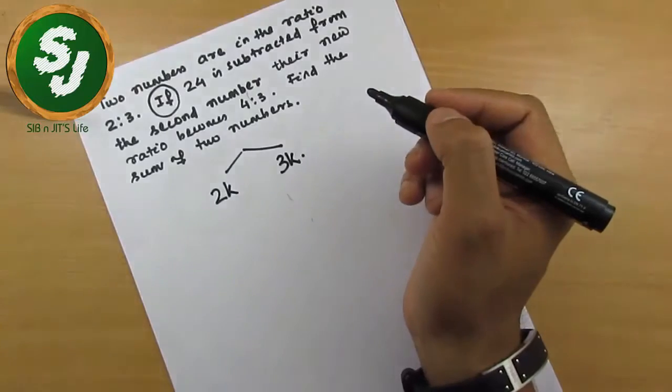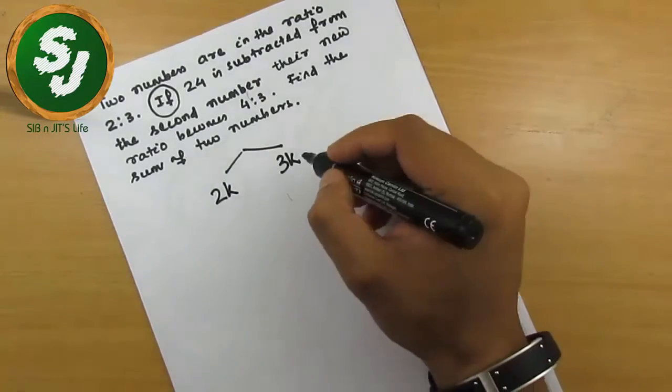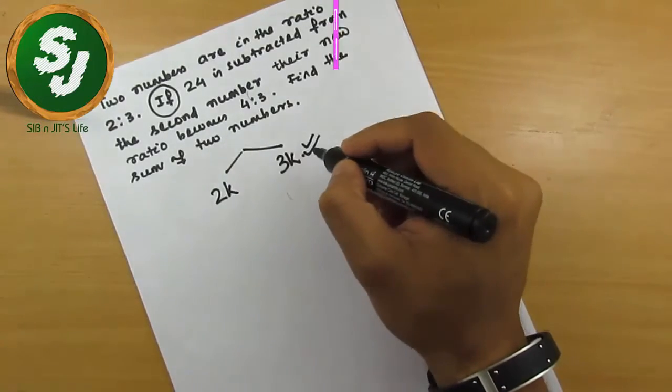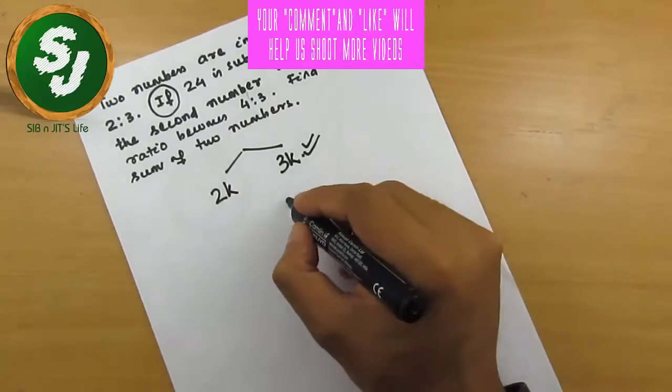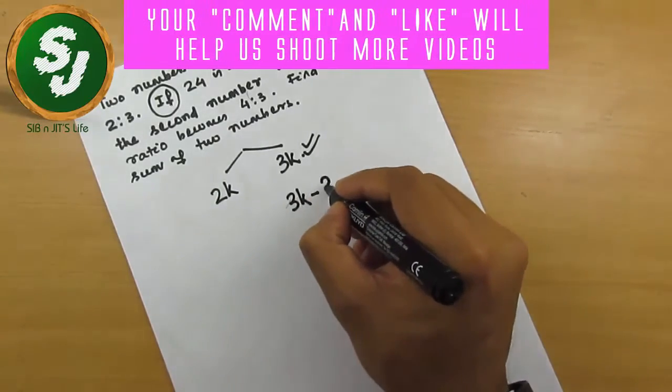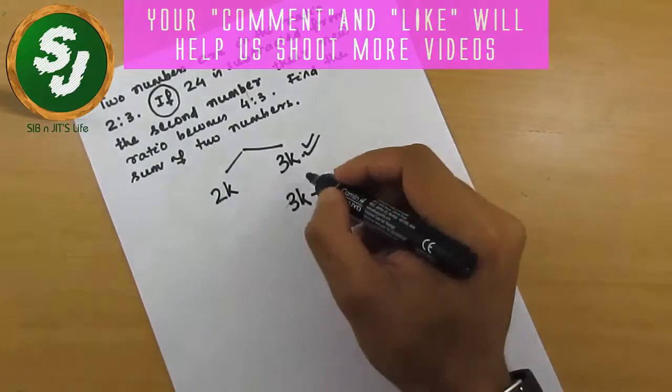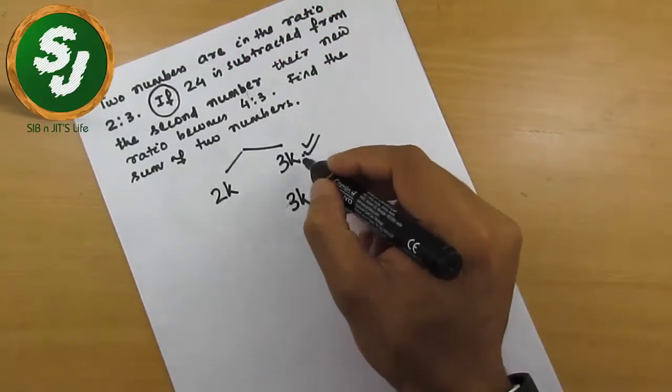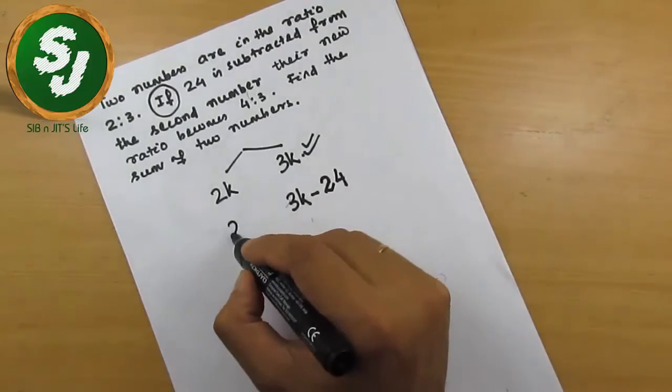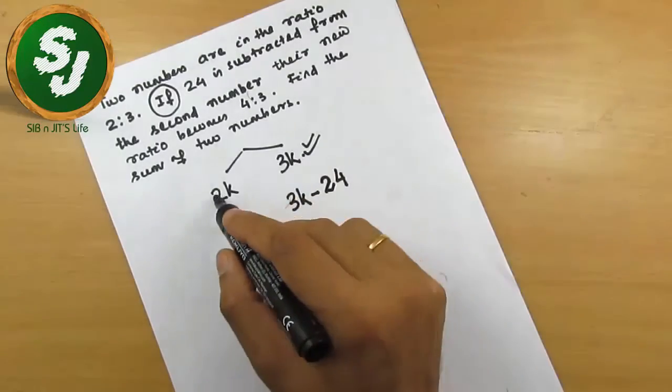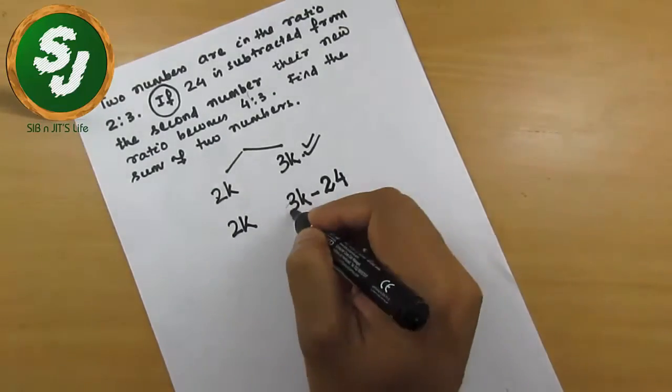3k. If 24 is subtracted from the second number, the second number is this 3k. If 24 is subtracted from this number, this number becomes 3k minus 24. And this 2k is unchanged because 24 was subtracted only from the second number. So here I write 2k. So these were the initial numbers, 2k and 3k. And if 24 is subtracted, this